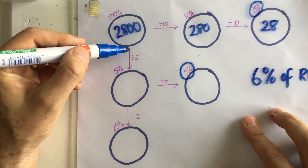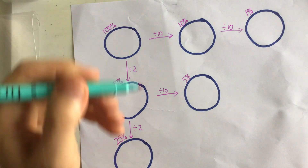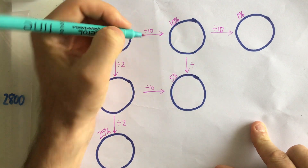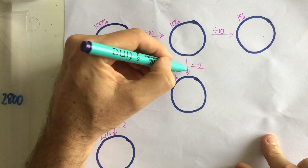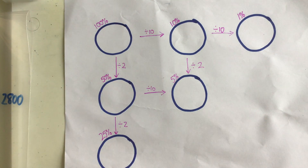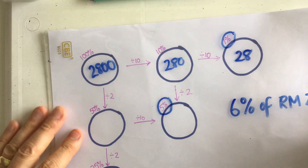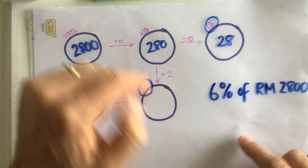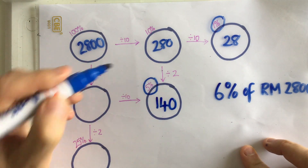I've actually noticed there's another link I can put into my bubble method chart. If I divide by 2 — when we come down we always divide by 2 — so 10% divided by 2 is 5%. Let's put that back in because I think that will help us. So if I want to find 5% and I already know 10%, I can find it by dividing by 2. So 280 divided by 2 is 140.